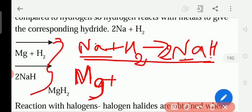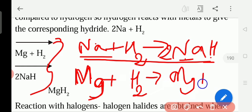Sodium plus hydrogen gives sodium hydride. This is one equation. It should be in the same line, straight line. It should not break and write. Then again, magnesium, when it reacts with hydrogen, gives magnesium hydride, MgH2.